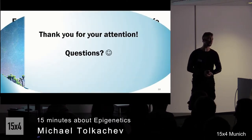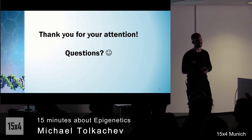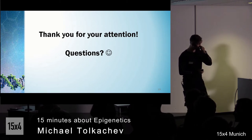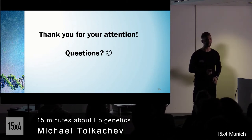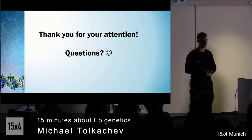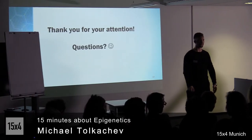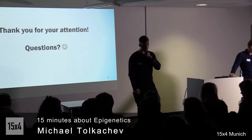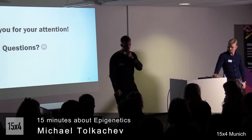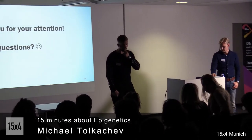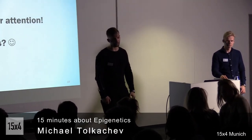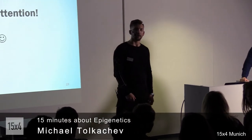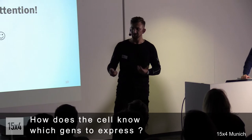Thank you for your attention. If you have any questions, I'm eager to answer. Question from the audience: In the beginning you posed the question of how a cell knows how to become a cardiac cell, a skin cell, whatever cell, and you explained that by acetylation and so on — how genes are suppressed or expressed. But to me this is a little bit like moving the problem. How does a cell know which genes to express and which to suppress?